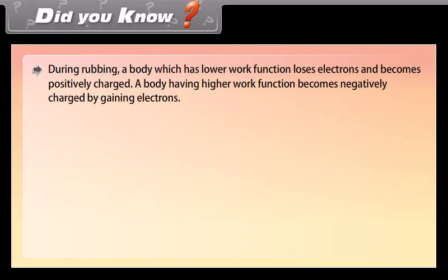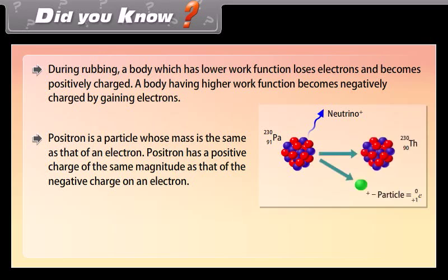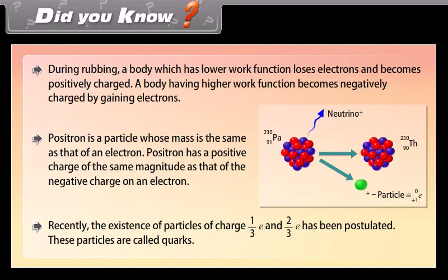Did you know? During rubbing, a body with a lower work function loses electrons and becomes positively charged, while a body with a higher work function gains electrons and becomes negatively charged. A positron is a particle whose mass is the same as that of an electron but with a positive charge of the same magnitude as the negative charge on an electron. Recently, the existence of particles with charges of 1/3 e and 2/3 e has been postulated; these particles are called quarks.